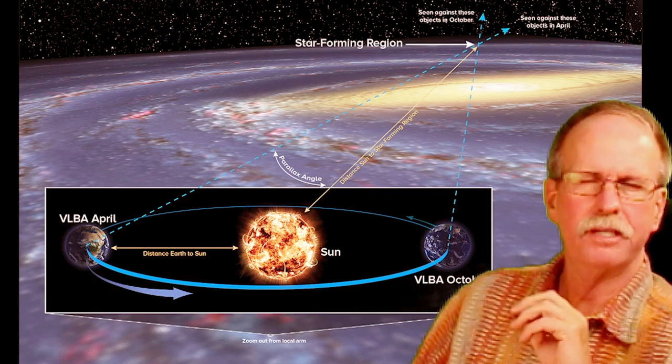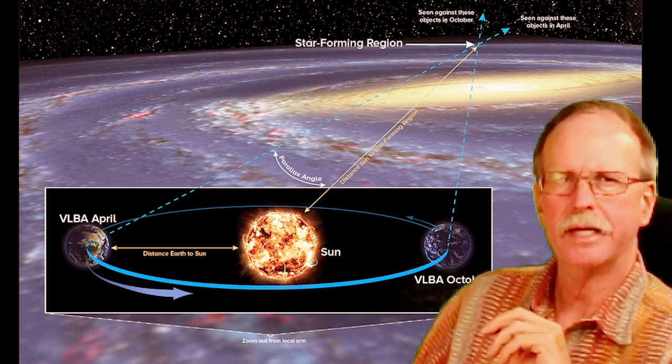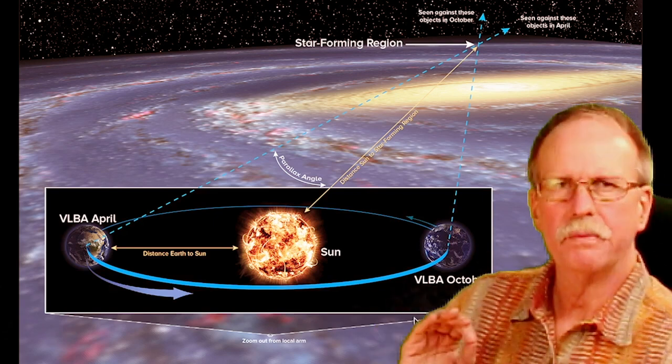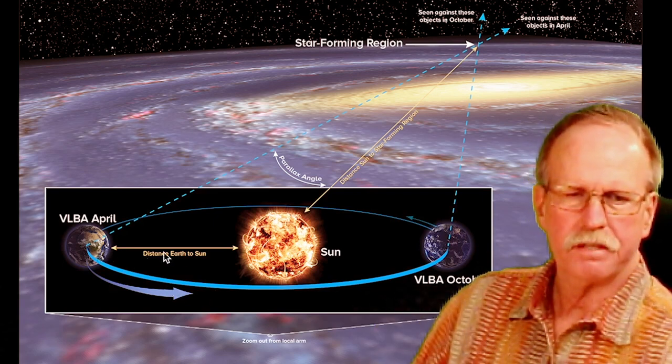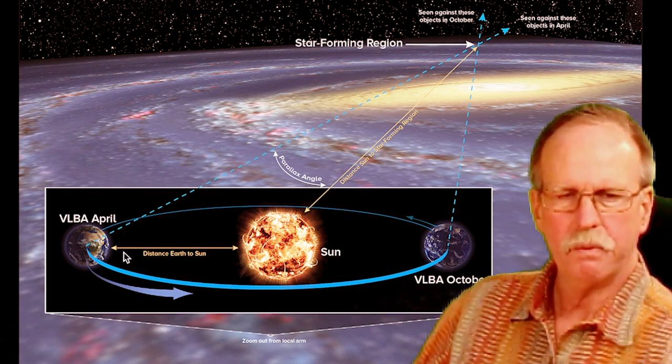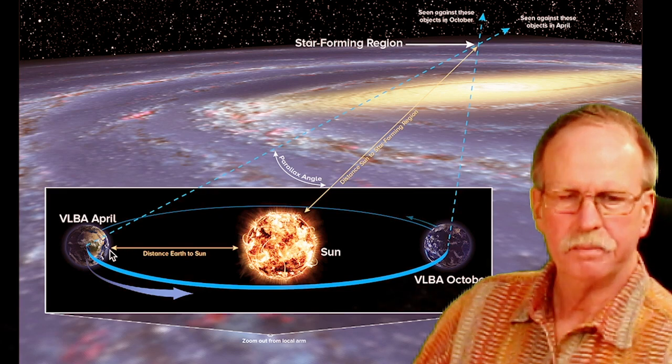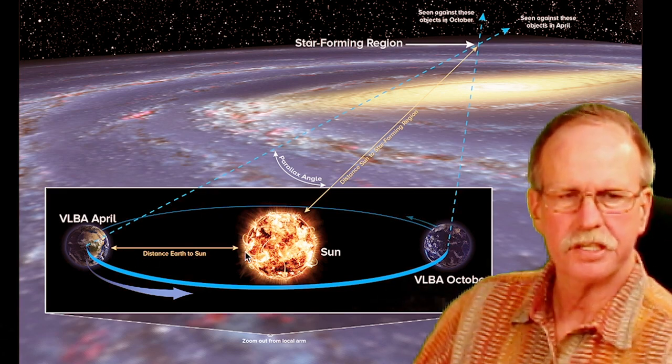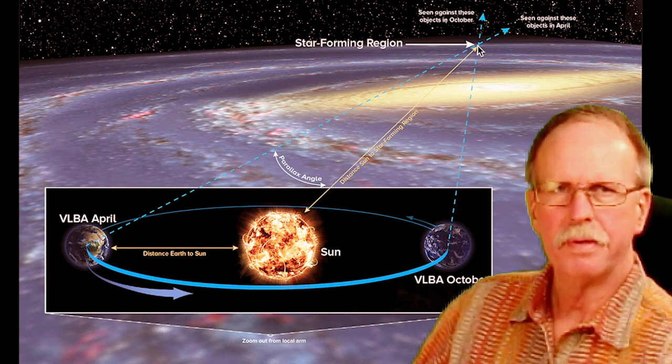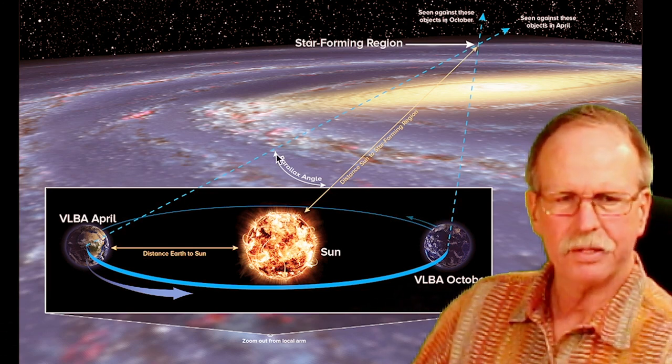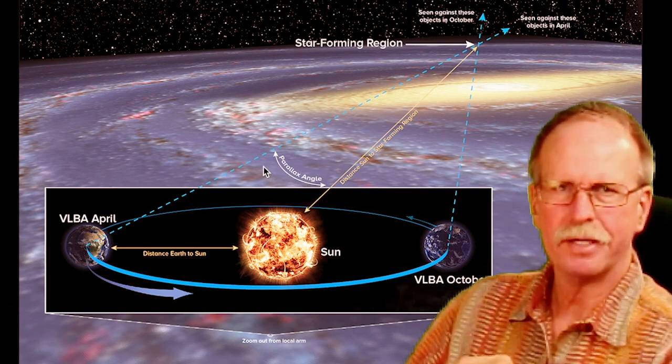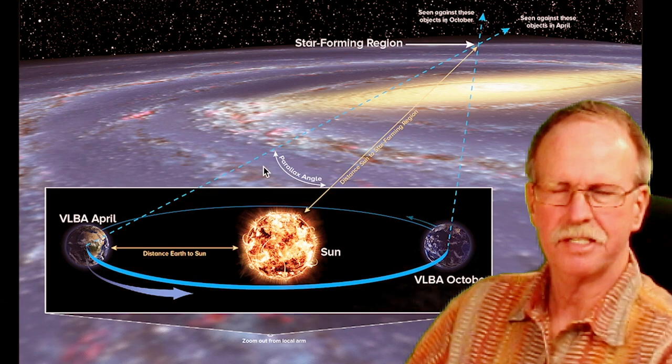Now, stellar parallax is the use of trigonometry to triangulate the distance to local stars. This is the basic way that we do it. Here is the distance from the Earth to the Sun. This is our baseline. And what we do is we form a triangle between the Earth, the Sun, and a star. And then what we measure is this angle called the parallax angle. And by using a little trigonometry, we can find our distances to the stars.